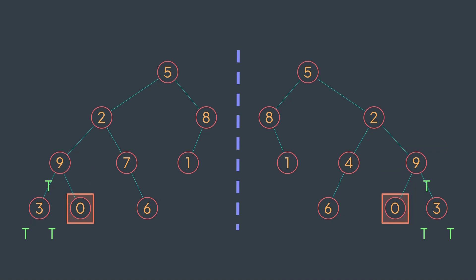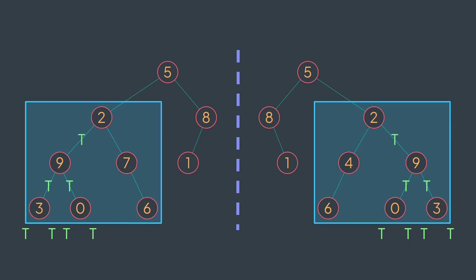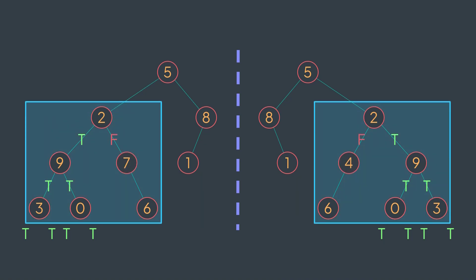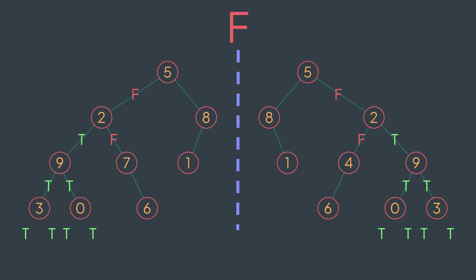Now we check the right subtree of root1 with the left subtree of root2 — they have the same root value. Their children are both null, both calls return true, the call returns true. Back up, all conditions are respected, the call returns true. Now the right subtree of root1 with the left subtree of root2 — they don't have the same root value, the call returns false. Not all conditions are respected, the call returns false. We don't even need to check the second call. The initial call returned false, so our tree is not symmetric.